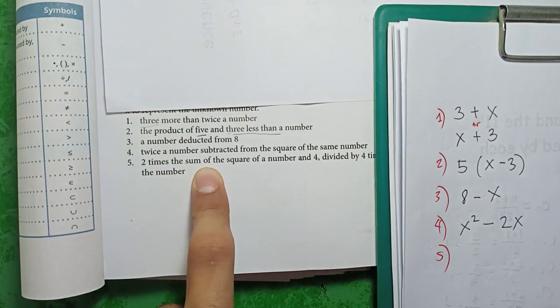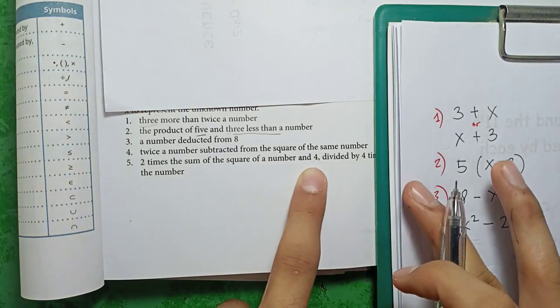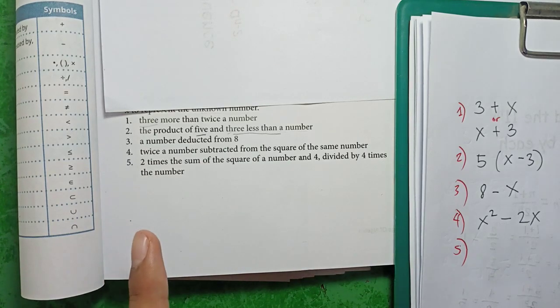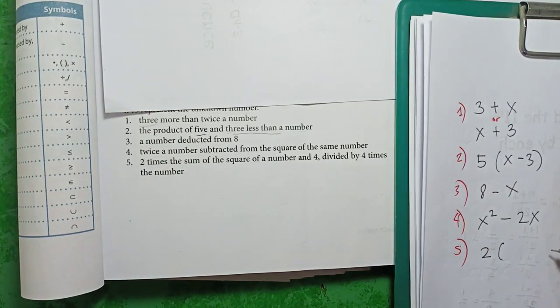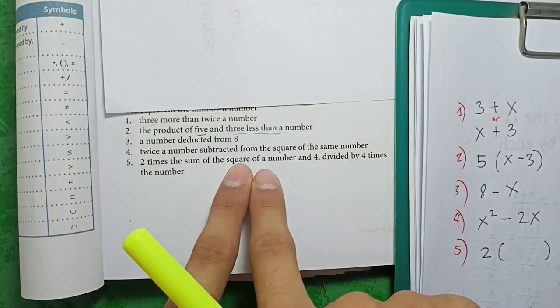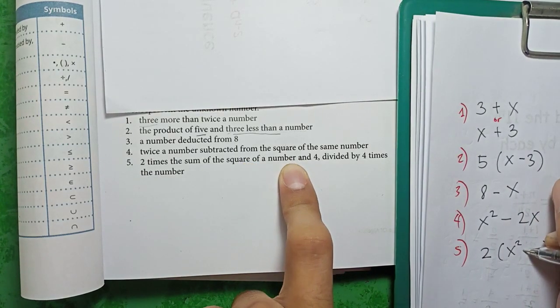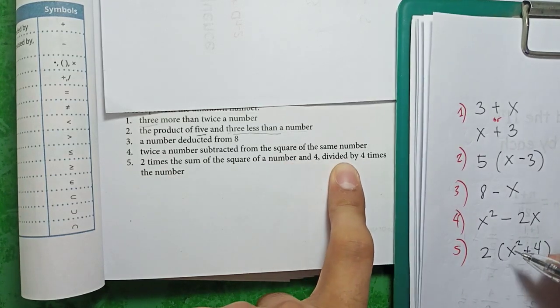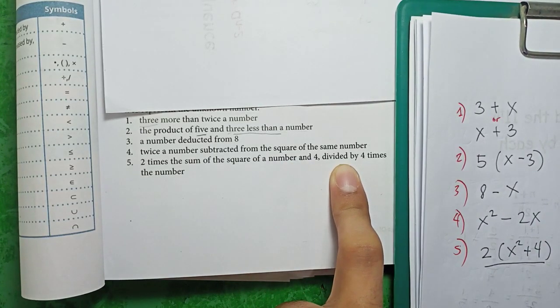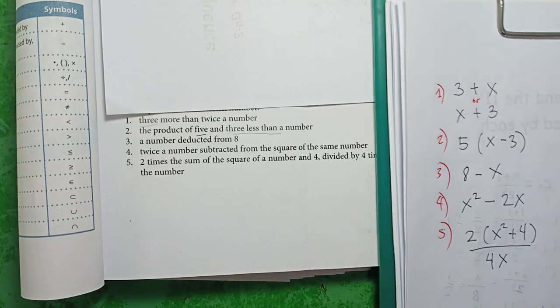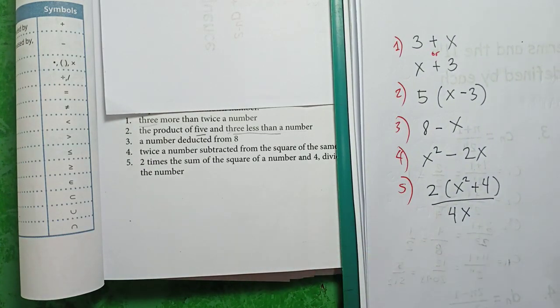Next, 2 times the sum of the square of a number and 4, divided by 4 times the number. So 2 times the sum of the square of a number and 4. The square of a number is x squared and 4, plus 4, divided by 4 times the number. 4 times the unknown number, or 4 times x, 4x. So that's it for number 5. Medyo tricky lang siya dahil sa less than, subtracted from, deducted from. Pero pag nakakita na ganun, reverse lang natin.